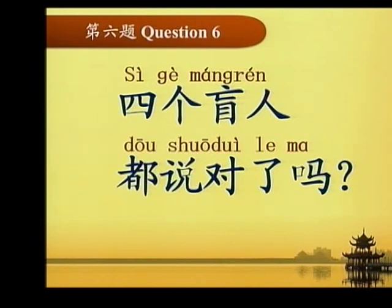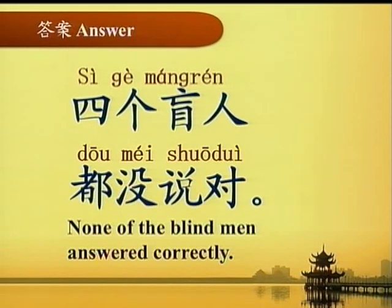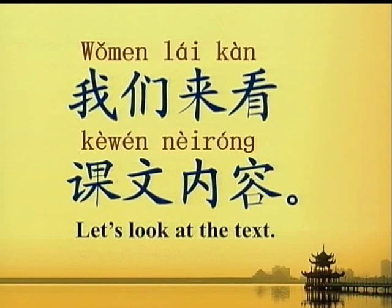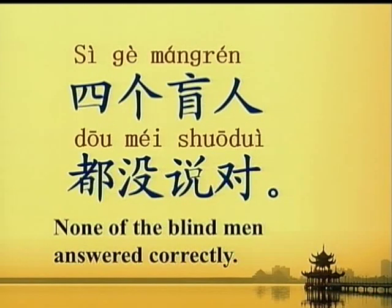四个盲人都说对了吗？ Did all four blind men answer correctly? 答案：四个盲人都没说对。 Answer: None of the blind men answered correctly. 我们来看课文内容：四个盲人都没说对。 None of the blind men answered correctly.